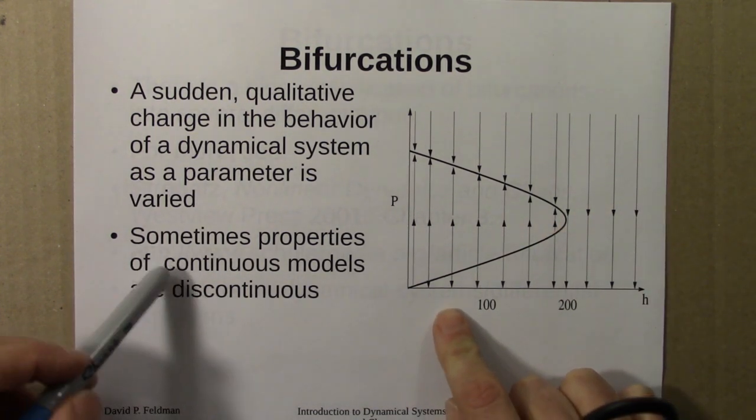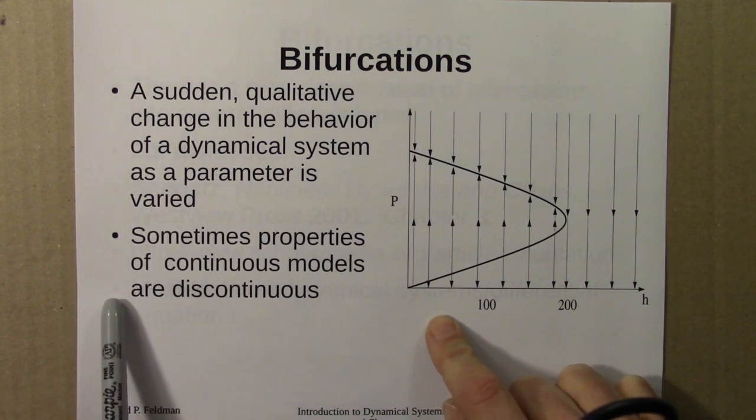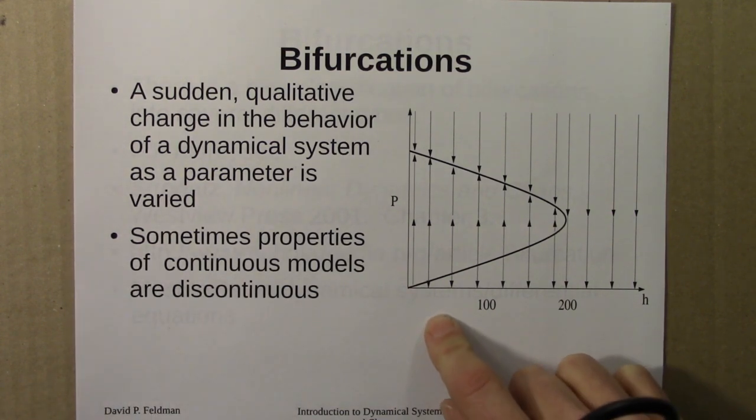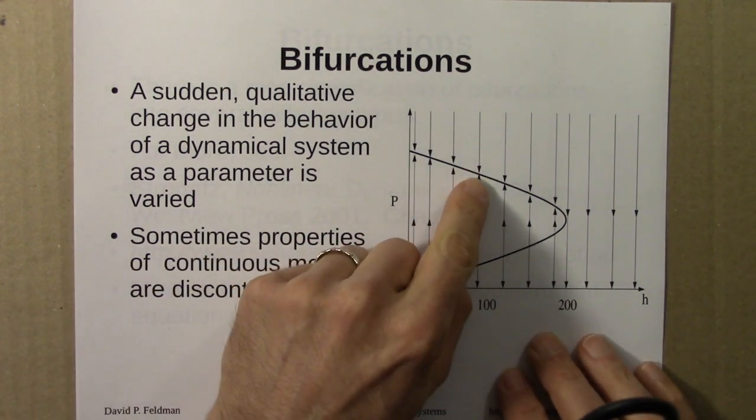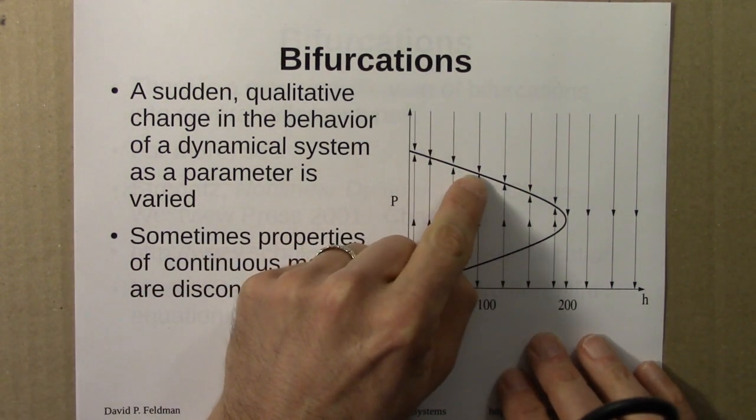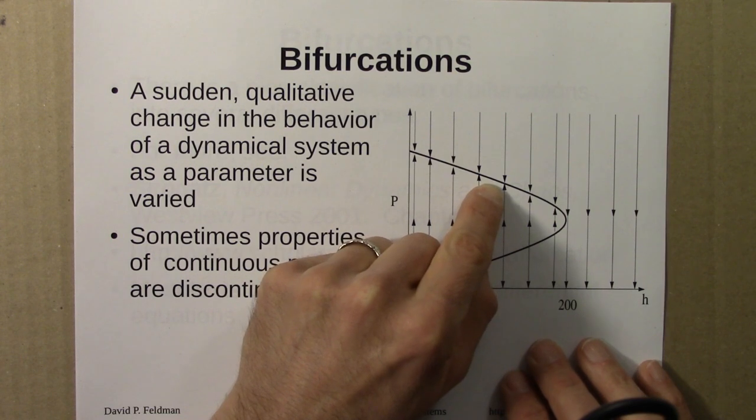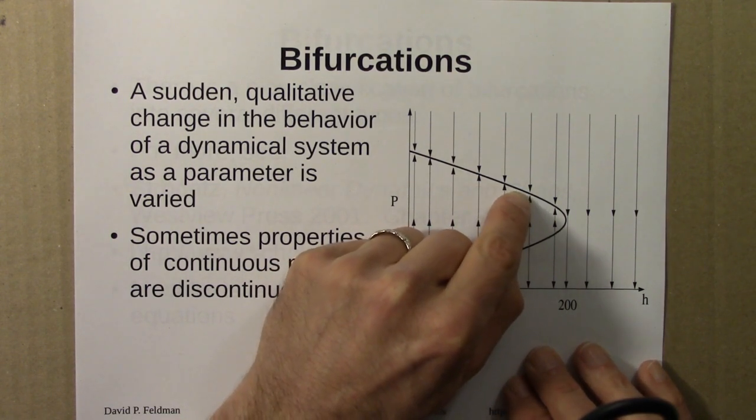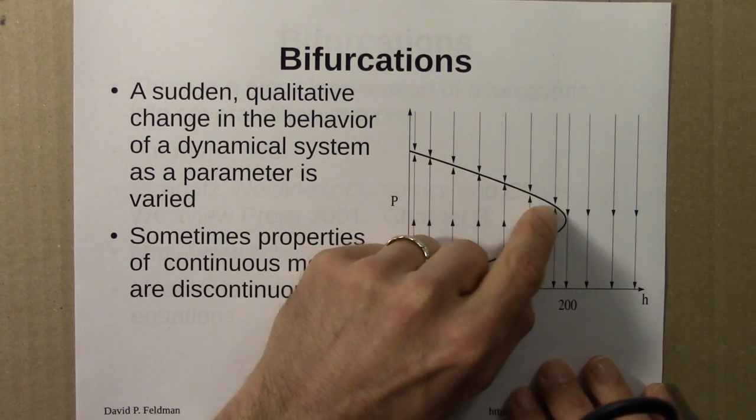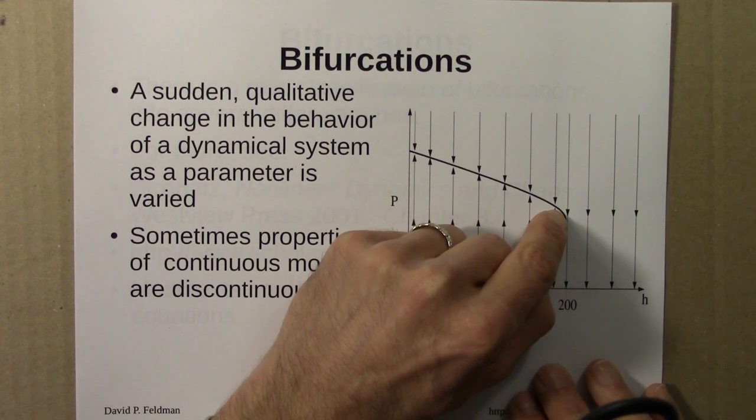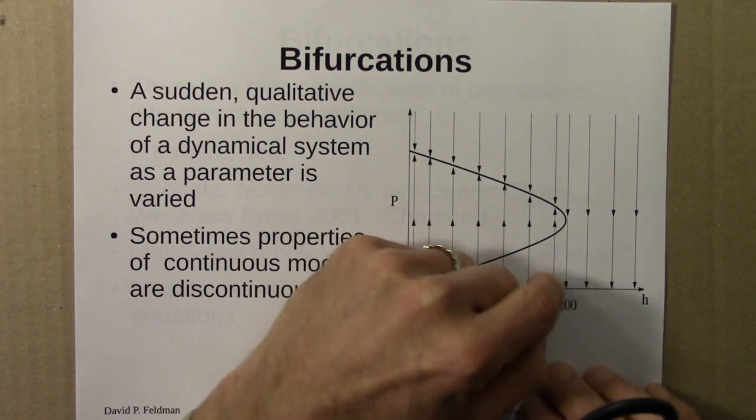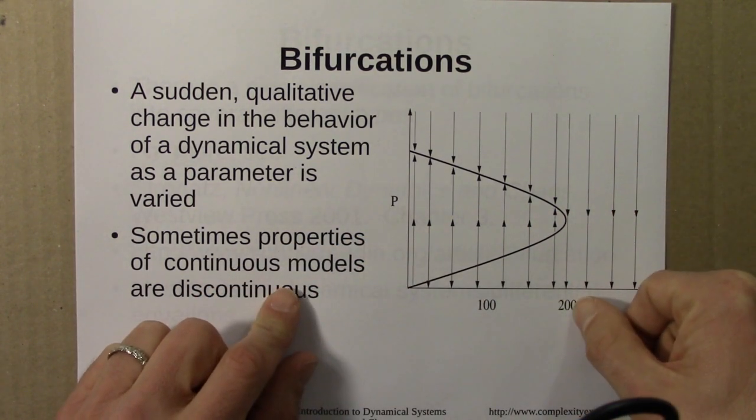The moral of this story is that sometimes properties of continuous models are discontinuous. Let me explain what I mean. If I'm up here and I increase h, a small change in h leads to a small change in this equilibrium, this attractor. But if I'm here and increase h a little bit, we fall off and this attractor disappears—the population would suddenly crash.